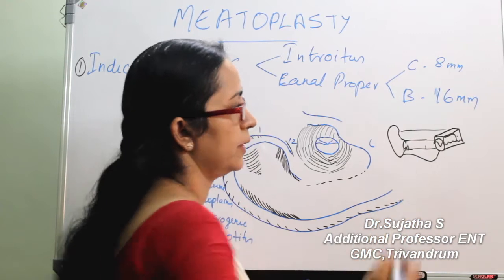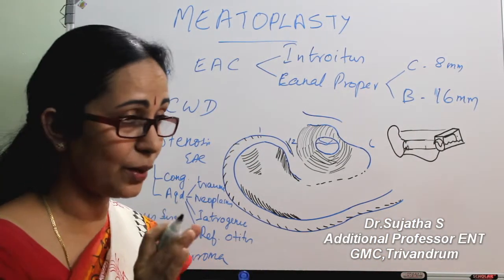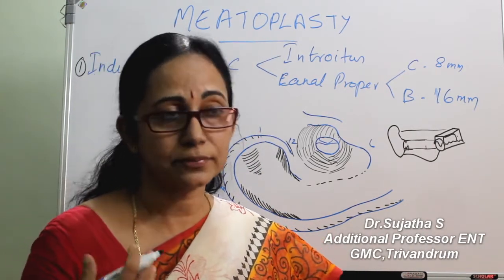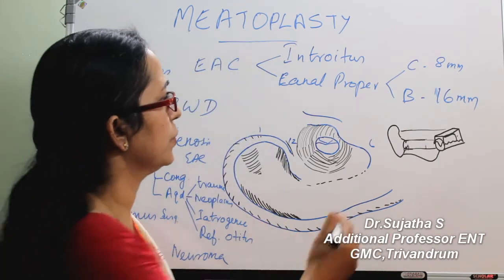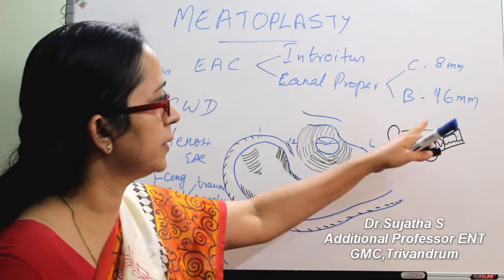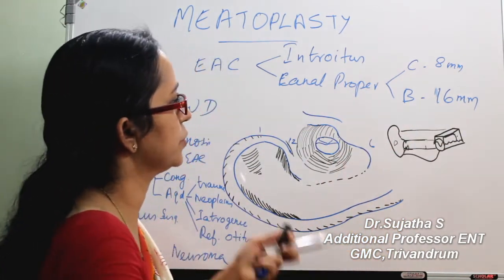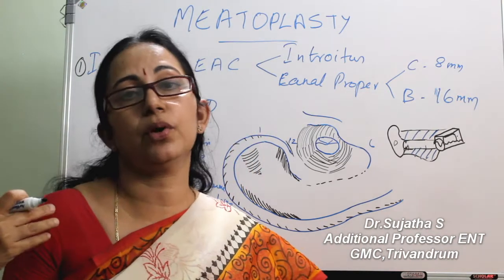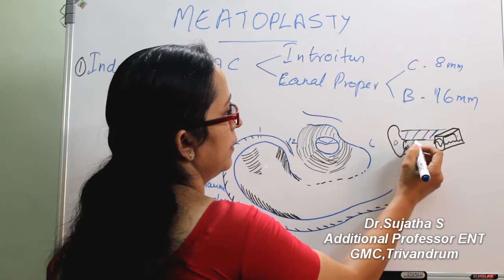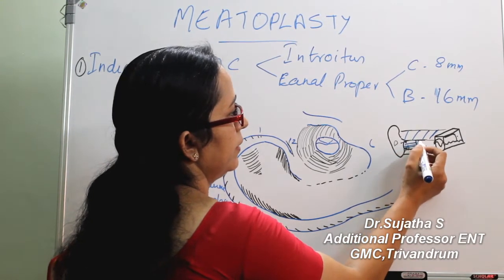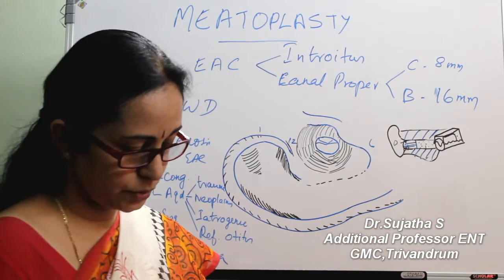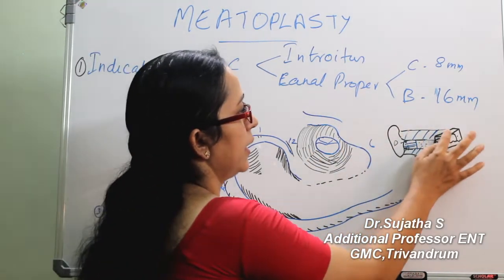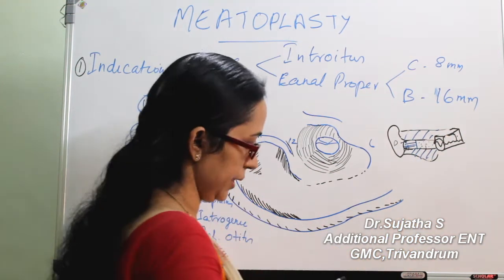Through the posterior wall, the middle ear communicates with the mastoid cavity. So this is your pinna, the external auditory canal, the middle ear, and the mastoid — which sits posterior to the posterior wall of the external auditory canal. In a canal wall down procedure, we make the middle ear and mastoid into a single cavity.